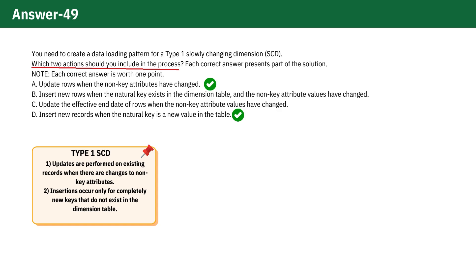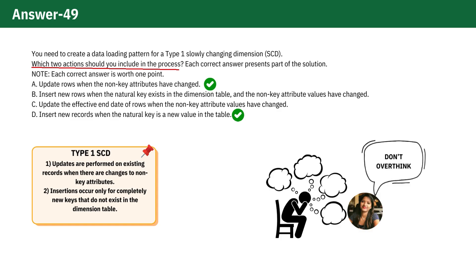1. Updates are performed on existing records when there are changes to non-key attributes. 2. Insertions occur only for completely new keys that do not exist in the dimension table. Sometimes it is better not to overthink and just answer the question.